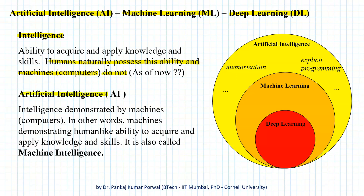So artificial intelligence is an attempt to impart these abilities to machines or computers. Artificial intelligence becomes intelligence demonstrated by machines or computers — or in other words, machines demonstrating human-like ability to acquire and apply knowledge and skills. It is also called machine intelligence.